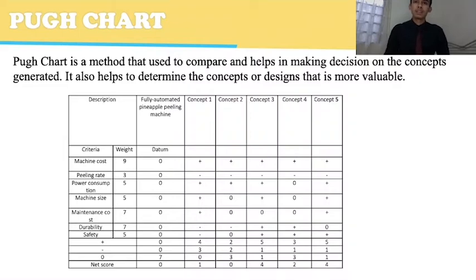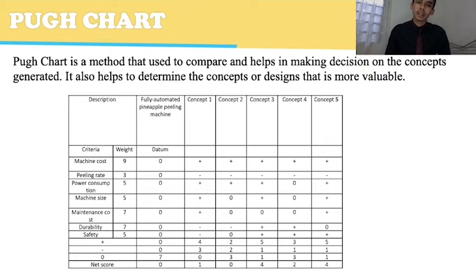Pugh chart. The Pugh chart is a method used to compare and help in making decisions on the concepts generated. It also helps to determine which concept or design is more valuable. In the Pugh chart, we have criteria for the concepts to be compared. For our project, we have five concepts, and among the five, concepts three and five have the highest net scores.